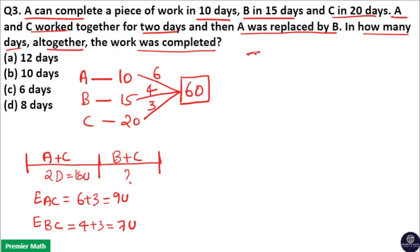So total work here is 60 unit. And work completed by A and C in 2 days is 9 into 2, 18 unit.